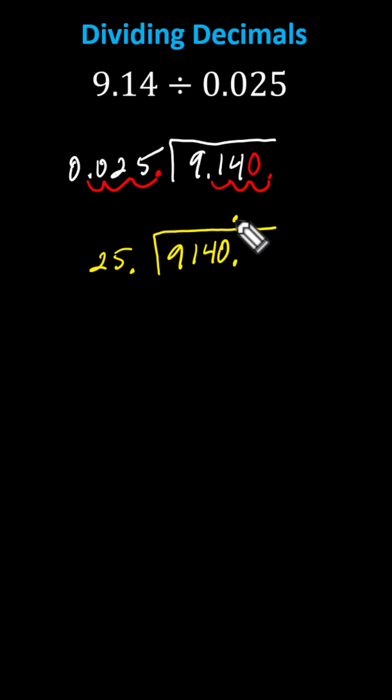We begin by determining how many 25s are in 91, which is 3. We place a 3 in the quotient, multiply by the divisor. 3 times 25 is 75, which we place below the 91, and subtract. 91 minus 75 is 16. We know the 3 is correct because 16 is less than the divisor.